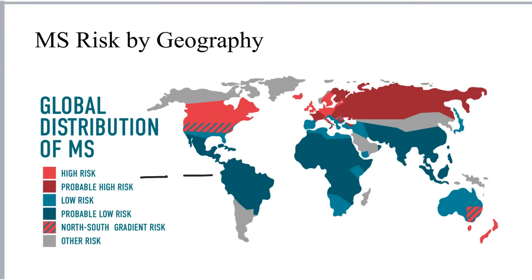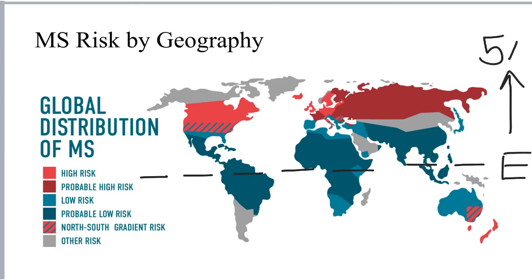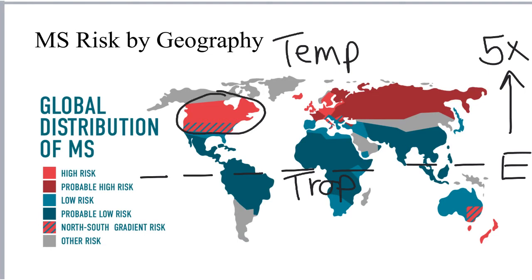Interestingly, the risk of developing multiple sclerosis differs depending on the geography in which a person grew up. MS is about five times more prevalent in temperate climates north of the equator compared to tropical climates near the equator, and even in most cases compared to temperate climates south of the equator. High-risk areas include most of the United States and Canada, Europe, as well as Northern Asia.